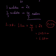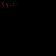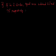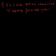Let's take another example. If in two circles, equal arcs subtend angles of 60 degrees and 75 degrees respectively at their centres, find the ratio of their radii.